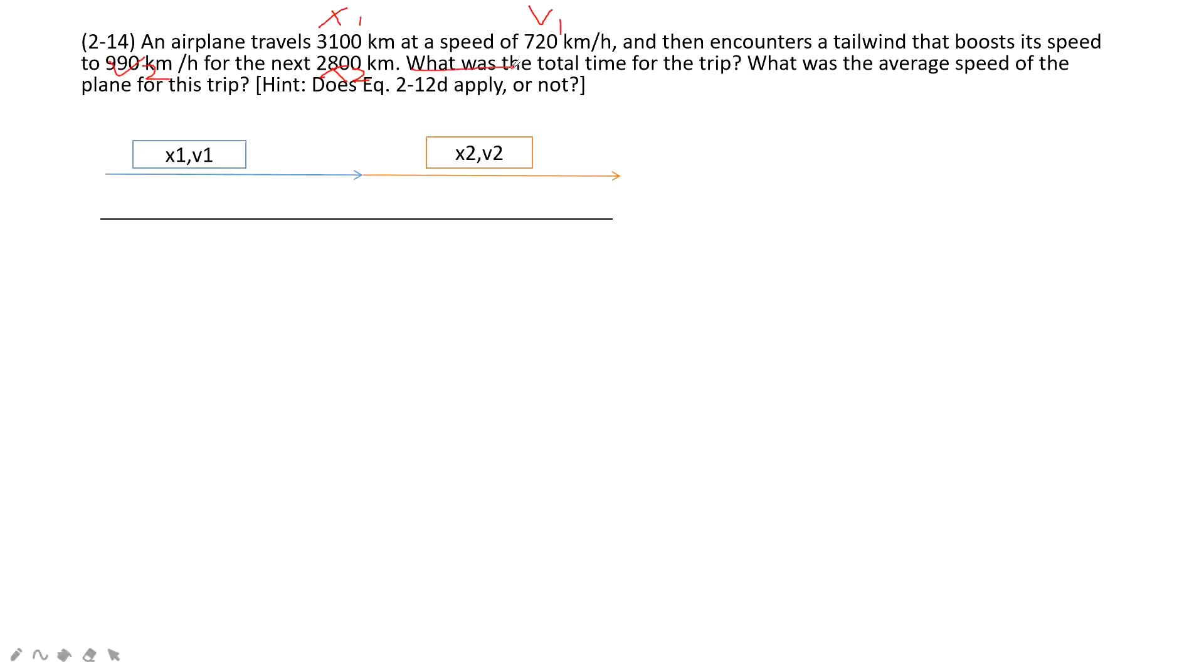The first one asks the total time. Second one is average speed, right? So as we know, we can consider this motion in two parts, the x1 part, x2 part, so the total time can be got as t1 plus t2.